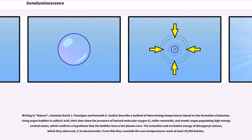Writing in Nature, chemists David J. Flannigan and Kenneth S. Suslick describe a method of determining temperatures based on the formation of plasmas. Using argon bubbles in sulfuric acid, their data show the presence of ionized molecular oxygen O2+, sulfur monoxide, and atomic argon populating high-energy excited states, which confirms the hypothesis that the bubbles have a hot plasma core. The ionization and excitation energy of dioxygenyl cations, which they observed, is 18 electron volts. From this they conclude the core temperatures reach at least 20,000 kelvins.